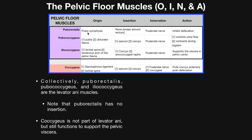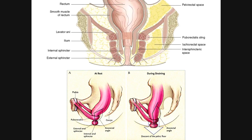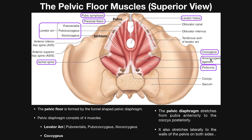Let's begin by talking about puborectalis. This muscle is going to have its origin on the pubic symphysis, and it technically doesn't have any insertion because it wraps around the rectum. This is the end of the digestive tract — this would be the rectum, and down here would be the anus. Because it originates here and loops around to the same spot on the opposite side, we'd say it doesn't technically have an insertion — it's just two origins, and the muscle wraps around. In some ways you could consider the anal coccygeal ligament an insertion of the puborectalis, but it's not a true insertion.